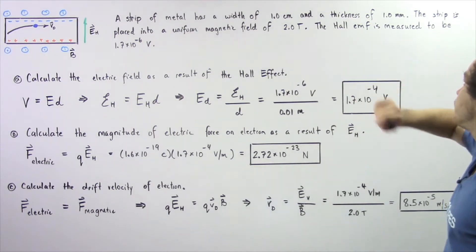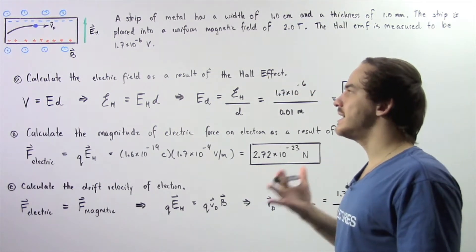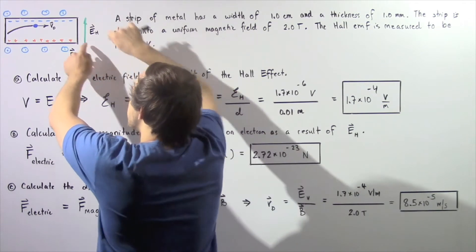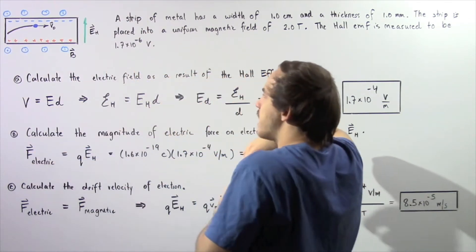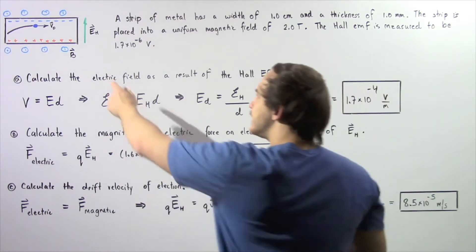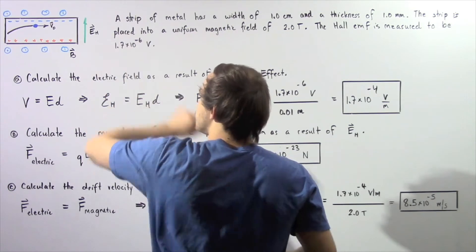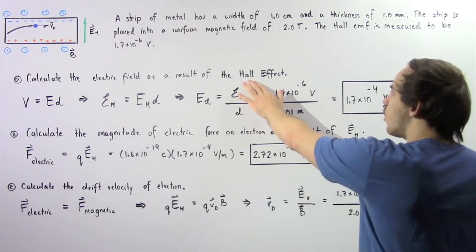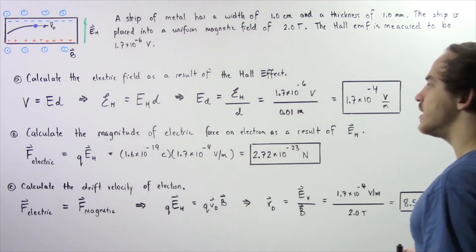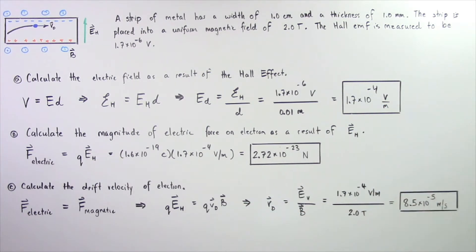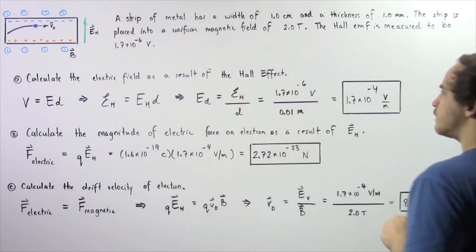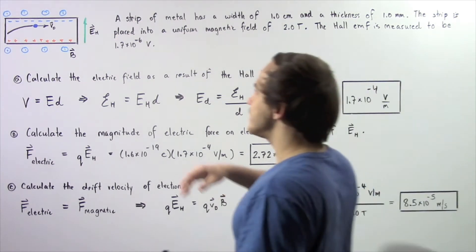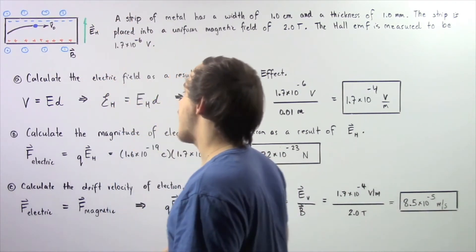The Hall EMF is measured to be 1.7 times 10 to negative 6 volts. Once the Hall effect takes place, there is a voltage difference between the two ends of our strip of metal, and that produces a certain electric field given by the Hall electric field EH. In part A we want to calculate that electric field. In part B, calculate the magnitude of electric force on a single electron as a result of that electric field. In part C, calculate the drift velocity of our electron as it travels next to the edge of our strip of metal.